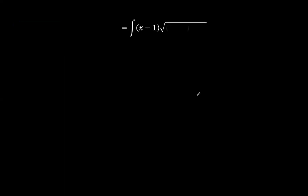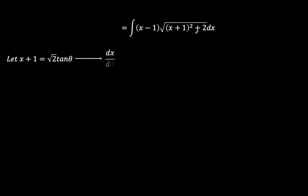Now, how to remove what's under the square root sign? What quickly comes to mind is to use the substitution of tangent theta, because we have this constant here. We equate x plus 1 to square root of 2 times tan θ, so that when you square this part, the entire constant can be taken out and you are left with tan² θ plus 1, which reduces to sec² θ. So let x plus 1 equal square root of 2 tan θ. Therefore dx/dθ is √2 sec² θ, and therefore dx is √2 sec² θ dθ.